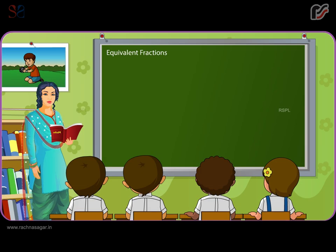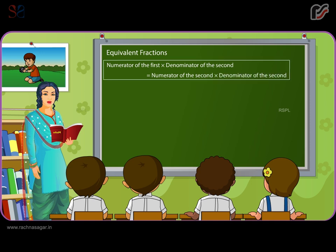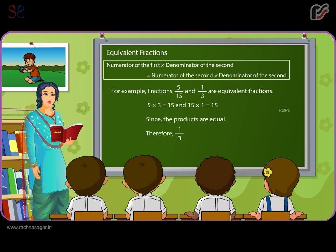Types of fractions. Equivalent fractions: Two fractions are said to be equivalent if the product of the numerator of the first and denominator of the second is equal to the product of the denominator of the first and the numerator of the second. For example, fractions five by fifteen and one by three are equivalent fractions because five multiplied by three equals fifteen, and fifteen multiplied by one is also equal to fifteen. Since the products are equal, one by three and five by fifteen are equivalent fractions.